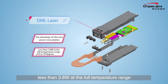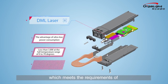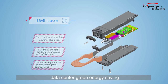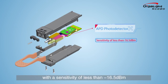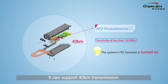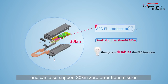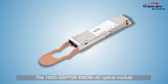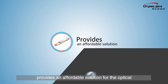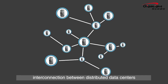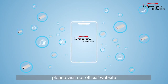Power consumption is less than 3.8 watts across the full temperature range of 0 to 70 degrees Celsius, meeting data center green energy-saving requirements. Its receiver adopts a high-sensitivity APD photo detector with sensitivity of less than −16.5 dBm. It supports 40-kilometer transmission when the system's FEC function is enabled, and 30-kilometer zero-error transmission when FEC is disabled. The 100G QSFP28 4WDM40 provides an affordable solution for optical interconnection between distributed data centers. For more information, please visit our official website at www.gigalite.com.